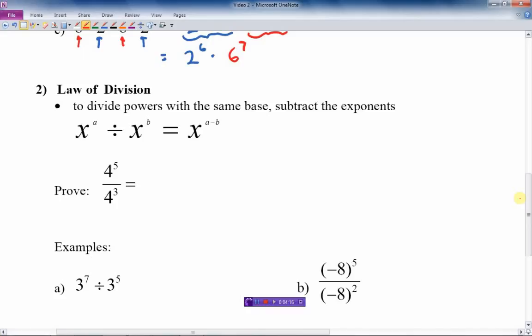So the law of division, the second one here, if I divide two numbers that have the same base, I gain the same base, the answer will be the same base, but the exponents will be subtracted.